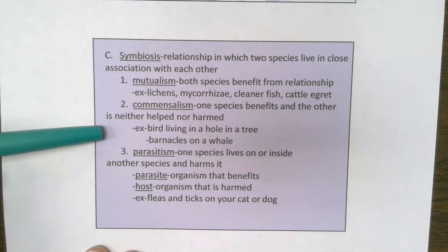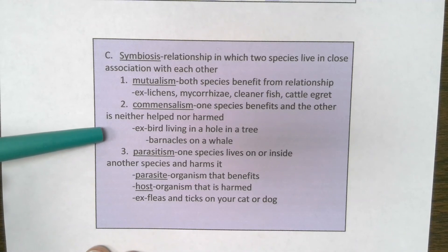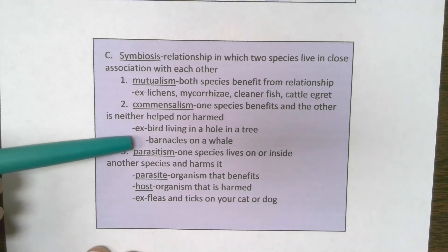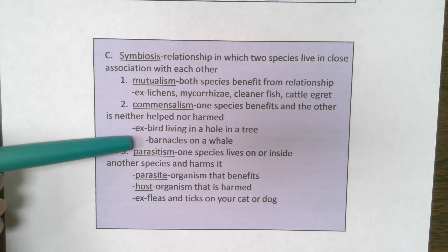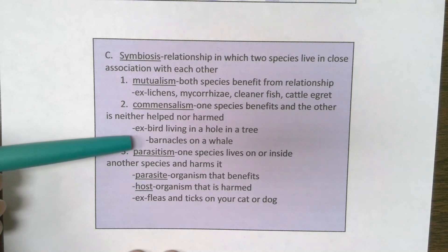The next type is commensalism, where one species benefits and the other is neither helped nor harmed. There are not that many commensal examples in nature. A bird living in a hole in a tree is sometimes described as one. Barnacles on a whale are another — barnacles are a crustacean that attach to the backs of whales or turtles, get moved around the ocean, and can filter feed on zooplankton and phytoplankton. The whale is neither helped nor harmed.